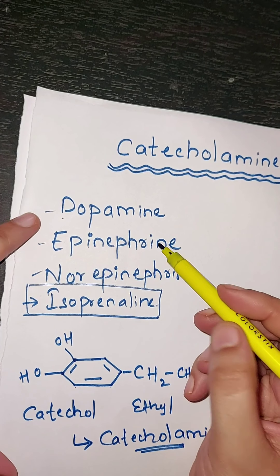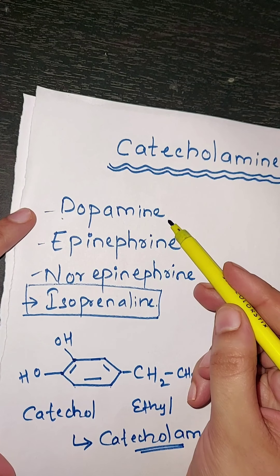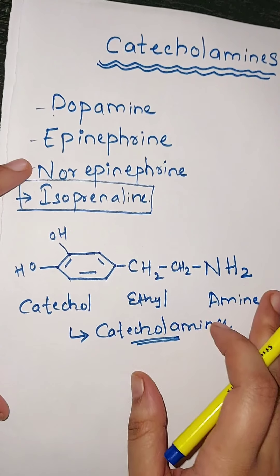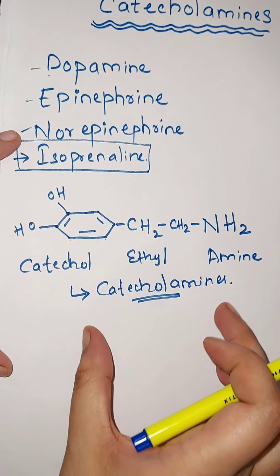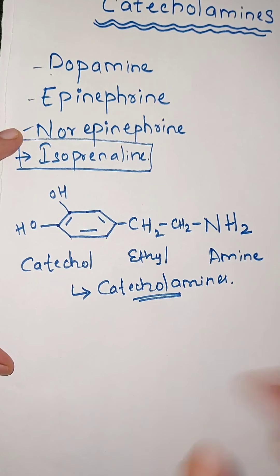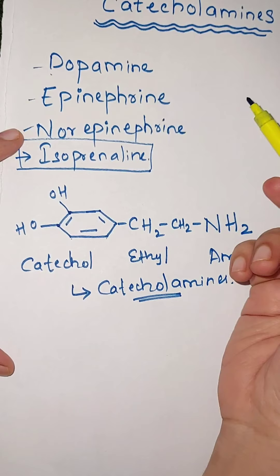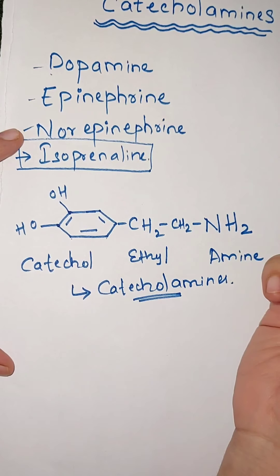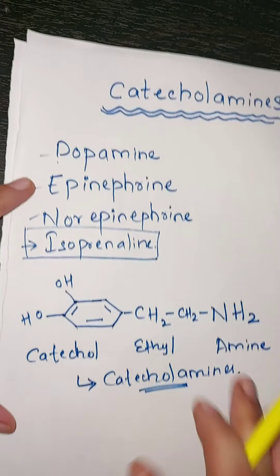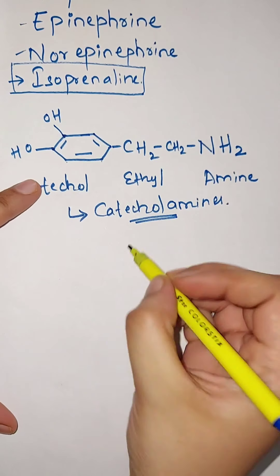Dopamine, epinephrine, norepinephrine, and isoprenaline all contain this basic nucleus of catecholamines. Some alteration to this basic structure will produce either dopamine, epinephrine, norepinephrine, or isoprenaline. This is the basic structure of catecholamines. Next, we'll see how catecholamines are synthesized inside the body.